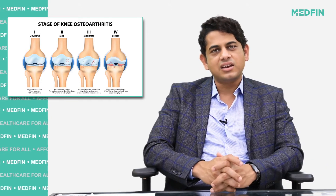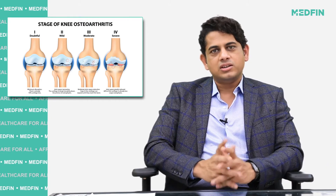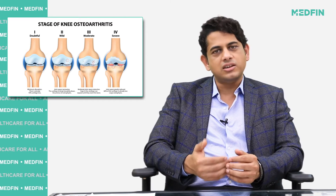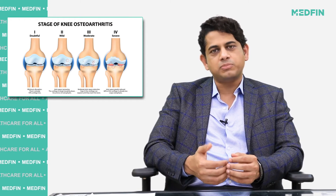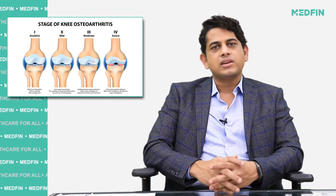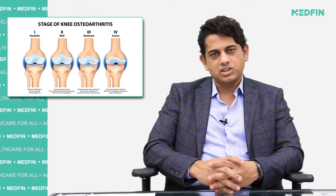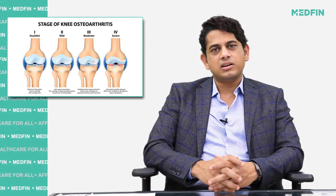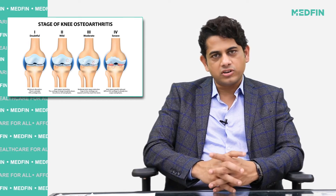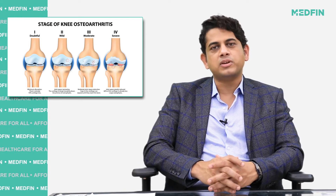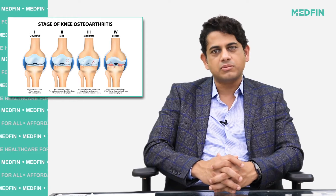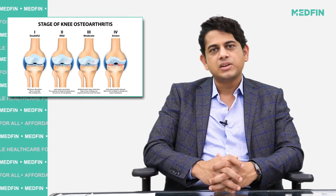In category 3 and 4, we try with injections called PRP — that is platelet-rich plasma — which has got results postponing the disease as well as relieving the patients from some pain.